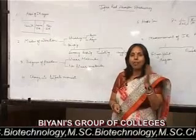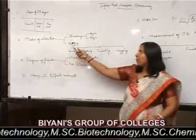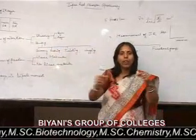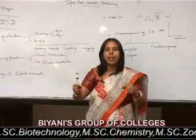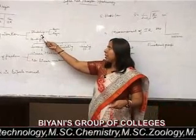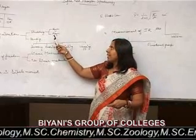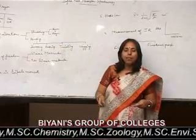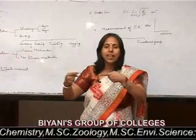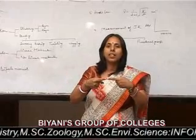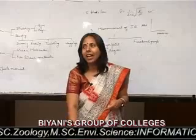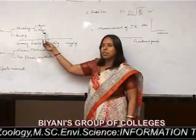We will now discuss the modes of vibrations. A molecule is continuously vibrating. Vibrations could be of two types: stretching vibrations and bending vibrations. Stretching, as we know, is like a rubber band — it stretches. Stretching vibrations can be of two types: symmetric stretching vibrations and asymmetric stretching vibrations. If the stretching is equal on both sides, it is symmetric stretching vibration; if not equal, it is asymmetric or asymmetric stretching vibration.